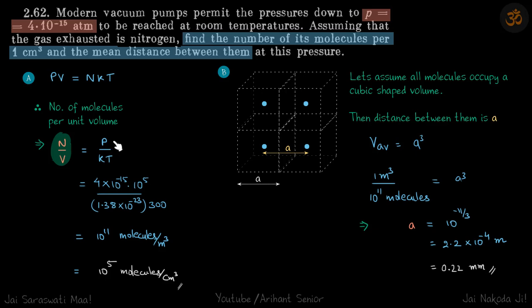P is given to us, room temperature is 300 K, and we'll use the Boltzmann constant. This gives our answer in molecules per cubic meter.